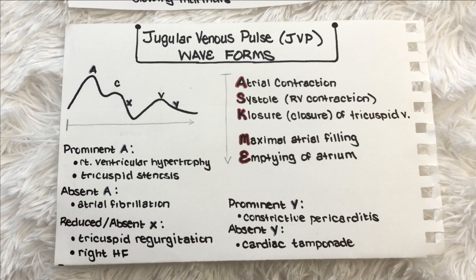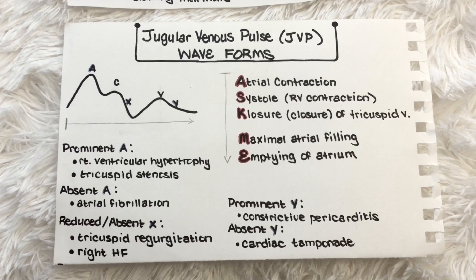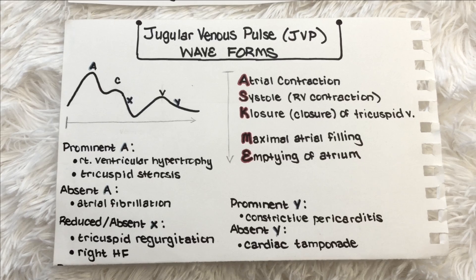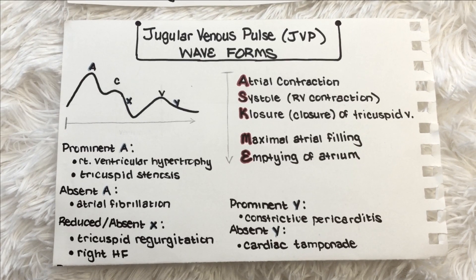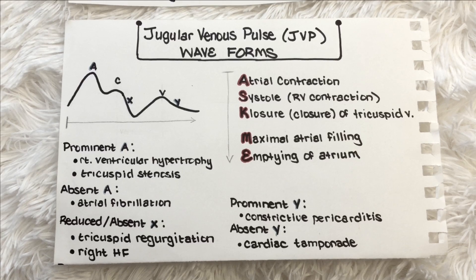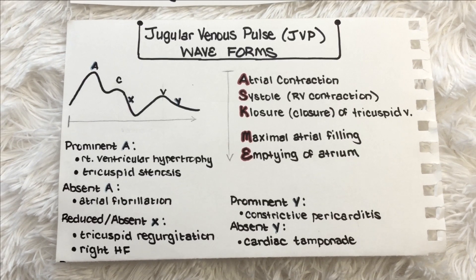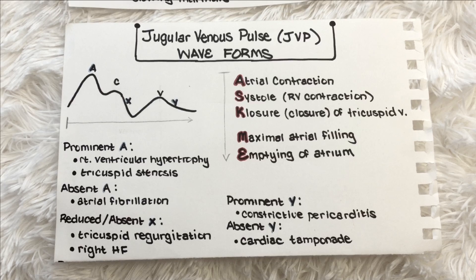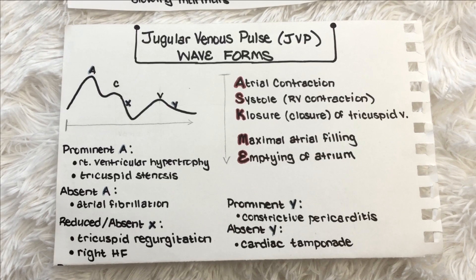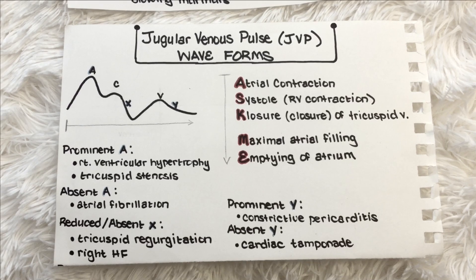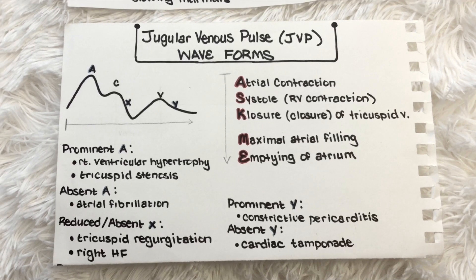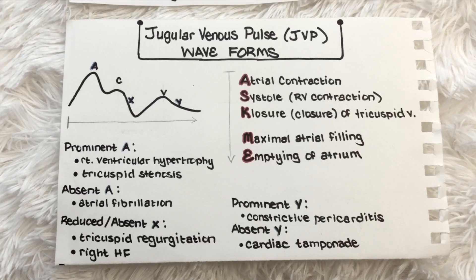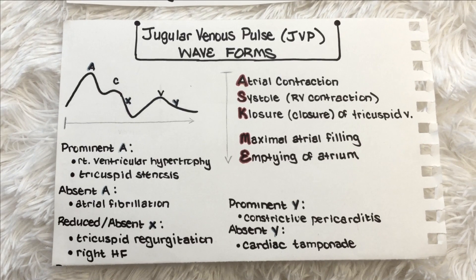So what do these waves and descents correspond with clinically? The A wave is atrial contraction — a prominent A wave is usually seen in right ventricular hypertrophy or tricuspid stenosis, and an absent A wave is usually due to atrial fibrillation. A reduced or absent X descent is usually due to tricuspid regurgitation or right ventricular heart failure. A prominent Y wave is usually due to constrictive pericarditis, and an absent Y wave corresponds to cardiac tamponade. Those are the important correlations you need to know.